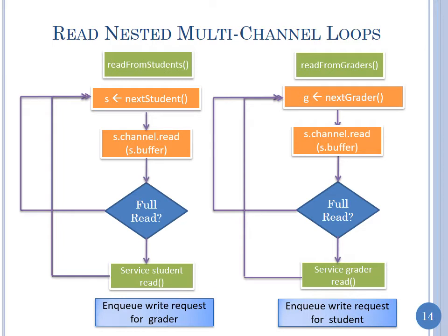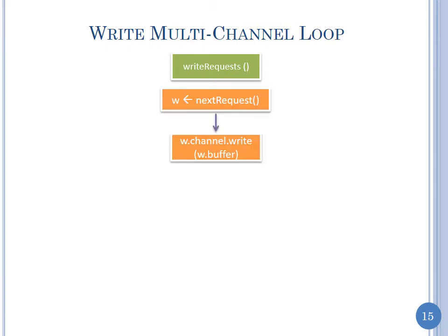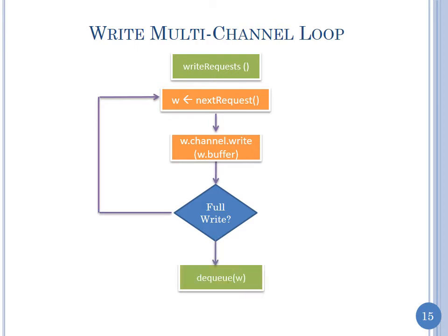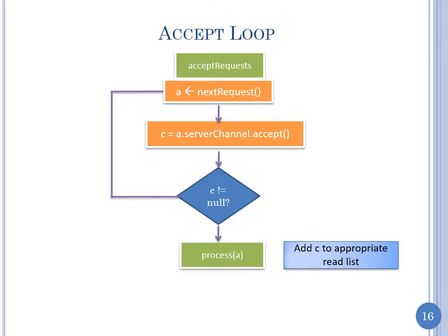Then we process the next read request. It's easy to show diagrammatically but a real pain to implement because messages from different students can get fragmented and scattered — we have to gather them and remember which buffer each piece goes into. When we read results from a grader we enqueue a write request for the student. For write requests: if it's a full write we dequeue it and go to the next; if not, we go directly to the next request. For accept we keep checking if accept can be fulfilled, and process it when ready.